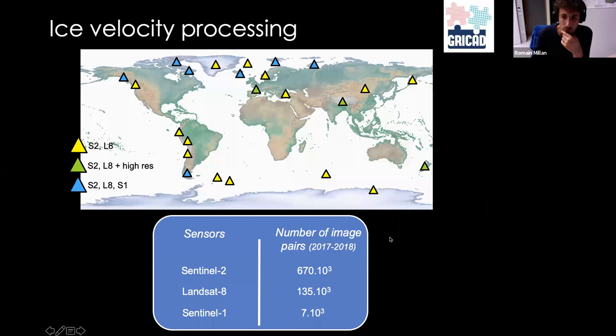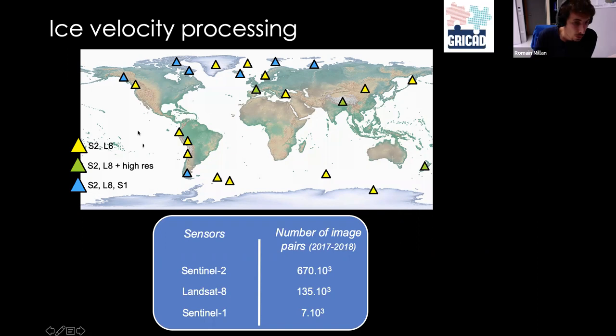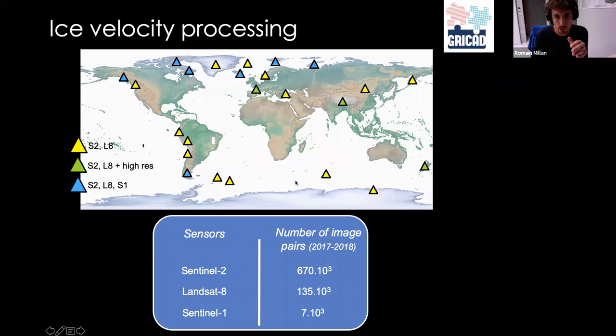On this map, you can see all the regions that were covered. All regions in yellow have Sentinel-2 and Landsat-8. Regions in green also have some high-resolution optical data. Regions in blue are covered with Sentinel-2, Landsat-8, and Sentinel-1. Overall, we processed over 800,000 pairs of images. This massive processing was only possible with the computer facility at the University of Grenoble, called GRICAD.